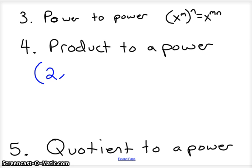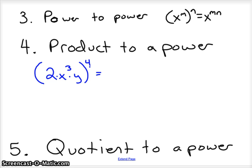Let's say we had 2x to the third y, all to the fourth power. Product means multiplication, so these are all products, and they're raised to the power of four. You apply the power to everything in the product because of the parentheses. So we'd have 2 to the fourth, which is 16, then power to power: x to the third to the fourth is x to the twelfth, and y to the first times the fourth is y to the fourth. That's the product to power rule.